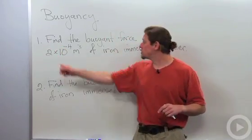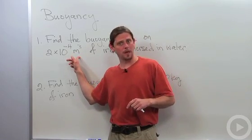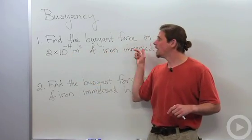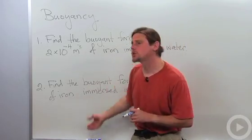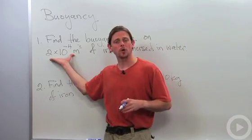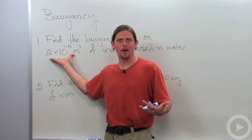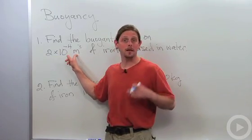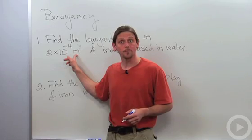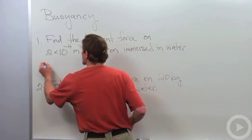Find the buoyant force on 2 times 10 to the minus 4 cubic meters of iron that's immersed in water. Notice that it doesn't tell me what this 2 times 10 to the minus 4 cubic meters tells me about the iron, but because it's got a unit, I immediately know that's got to be the volume. So we'll use Archimedes principle.